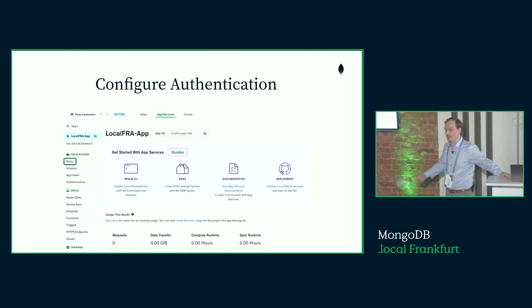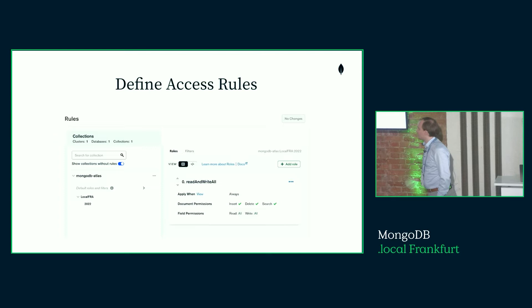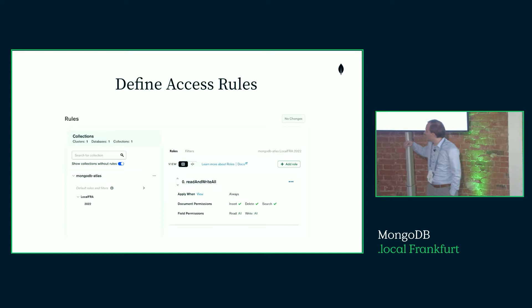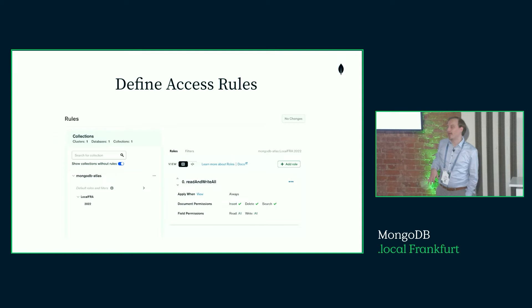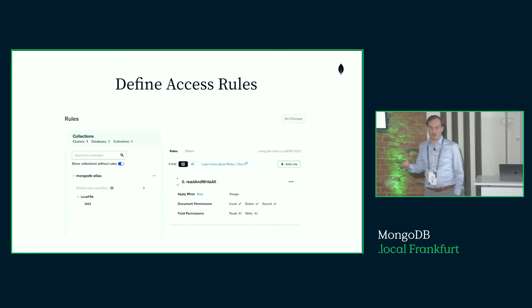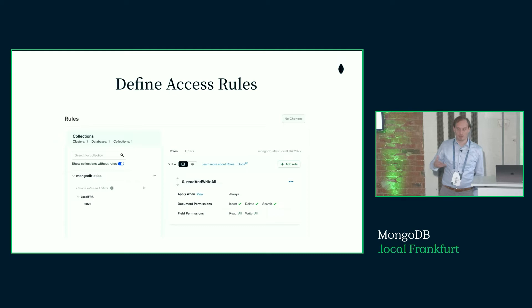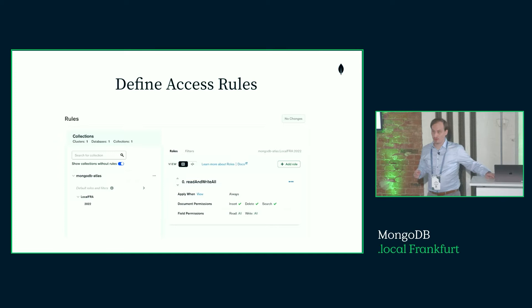In the rules section you define not only which collections users can access, but go even more granular — which documents and fields a user can read and write. I've defined a new database called 'local_frankfurt' with a collection '2022', giving all users read and write access to all documents and fields. This is a simple starting rule; later you can create more complex ones based on user ID matching, restricting access to only documents or fields that match the authenticated user.